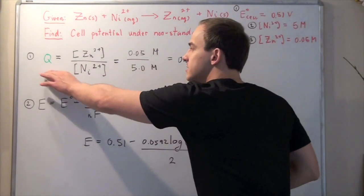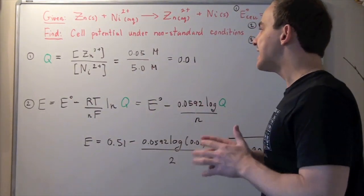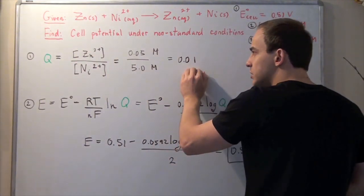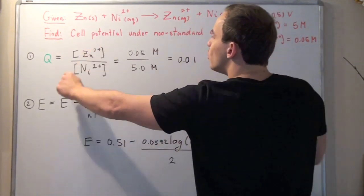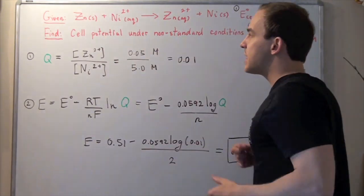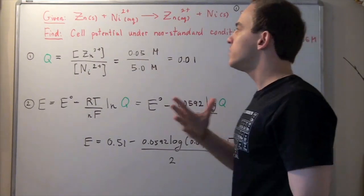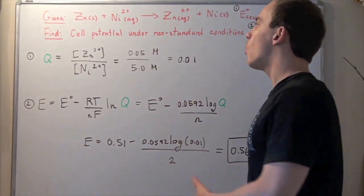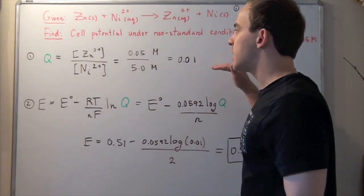Recall what Q tells us about our reaction. If Q is less than 1, that means we have a lot of reactants and not much product. For every 1 zinc in the aqueous state, we have 100 nickels in the aqueous state. That means we have much more reactants than products. According to Le Chatelier's principle, this reaction will be very product favored. It will want to form the products.